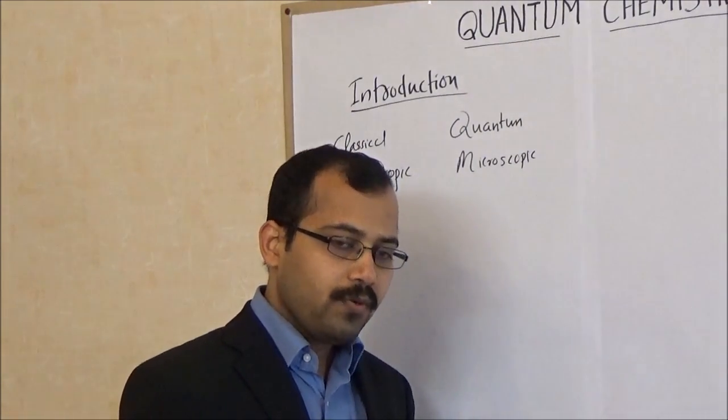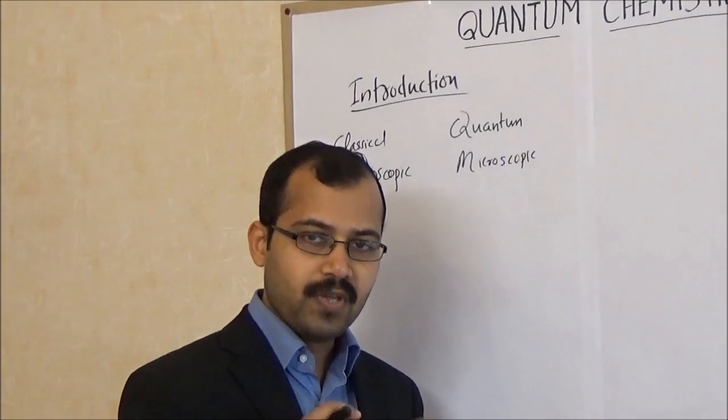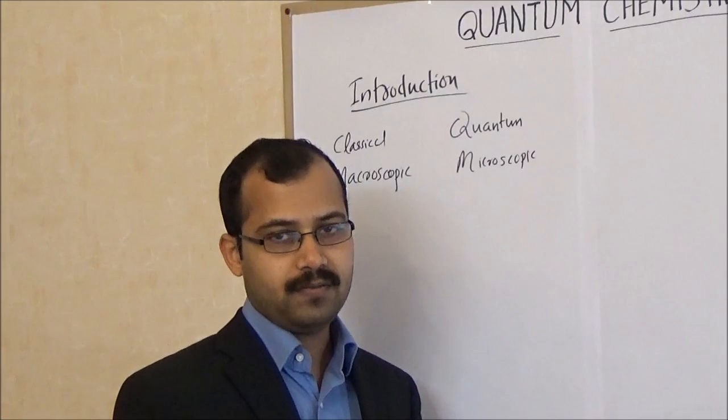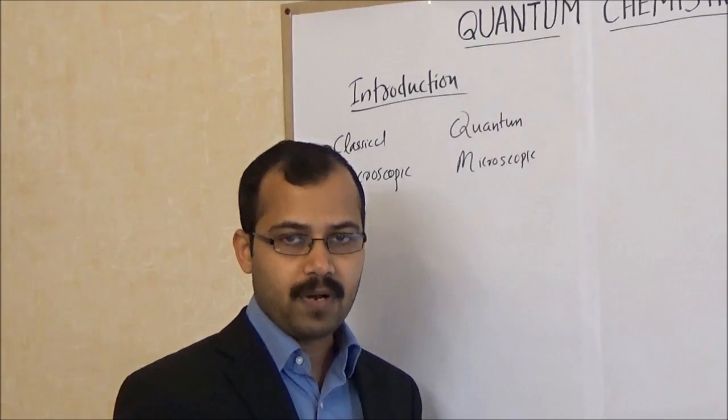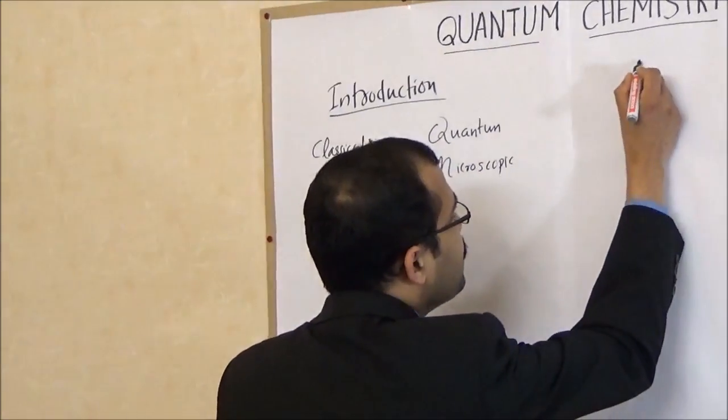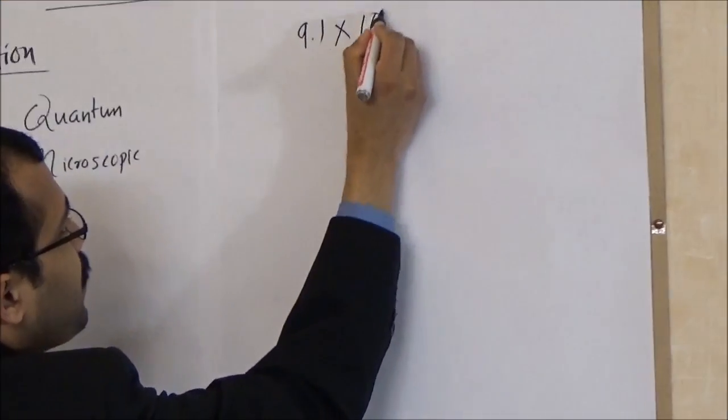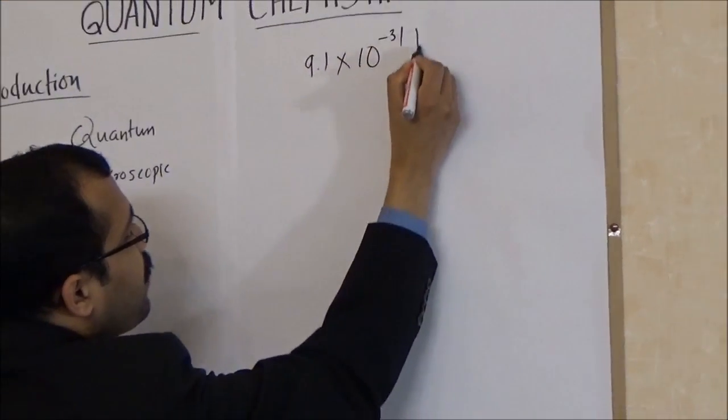But what do we mean by microscopic particles? Microscopic particles means very, very, very tiny particles. For example, an electron is a microscopic particle. We know that the rest mass of electron is 9.1 times 10^-31 kilogram.